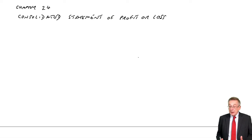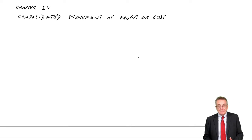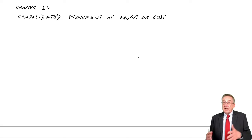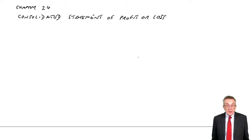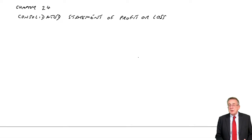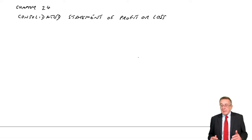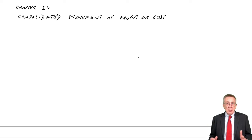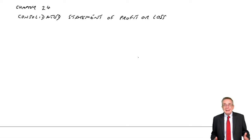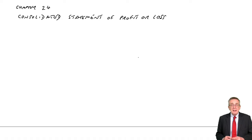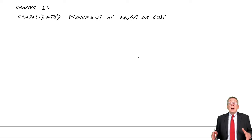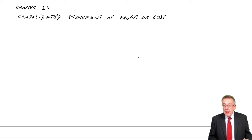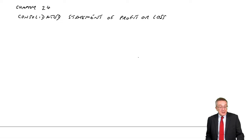In the previous two chapters, we've been looking at the consolidated statement of financial position. But when one company controls another company, we're also required to produce a consolidated statement of profit or loss. In a similar way to the statement of financial position, we show the total profits of the group as a whole. But then we are required to show how much of that profit belongs to the non-controlling interest, and how much belongs to the shareholders in the parent company. I'll explain what I mean and the various problems that can arise by means of examples.